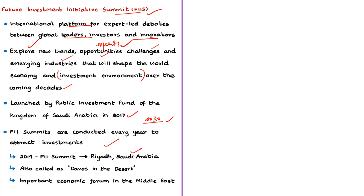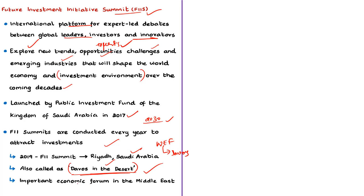The 2019 Future Investment Initiative Summit is happening at Riyadh, the capital of Saudi Arabia. This summit is also known as 'Davos in the Desert' because, similar to the World Economic Forum held at Davos in Switzerland, this summit is held every year in Saudi Arabia — a desert nation. It is also seen as the most important economic forum in the Middle East.